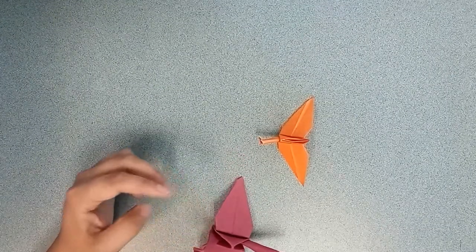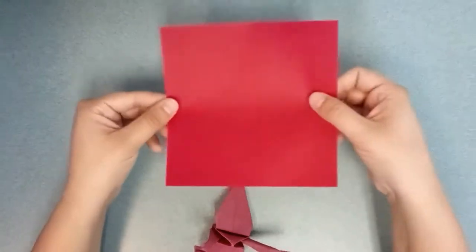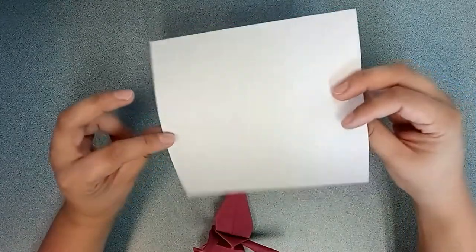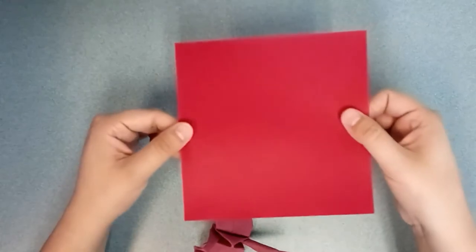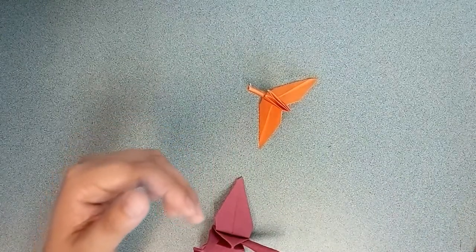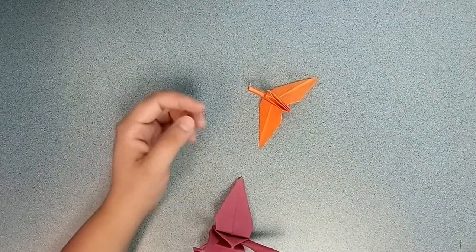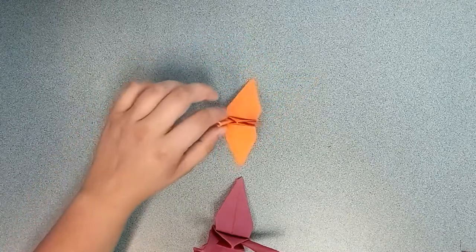You can use the proper origami paper if you want, which is nice because it's thin, it's already the right size, it's a different color on one side so you can tell which side you want to have facing out.